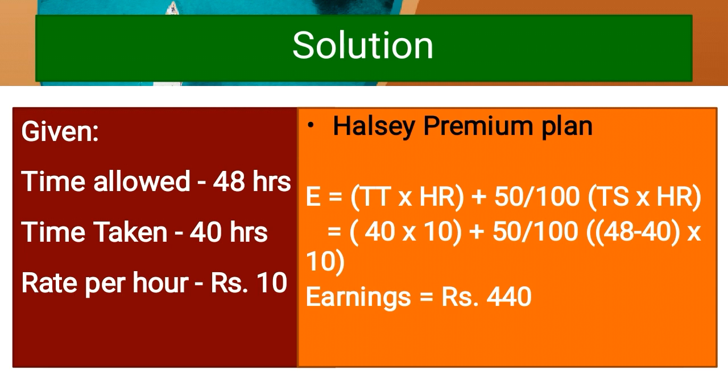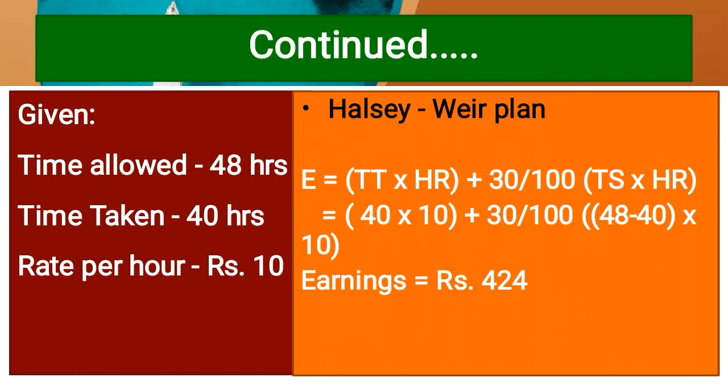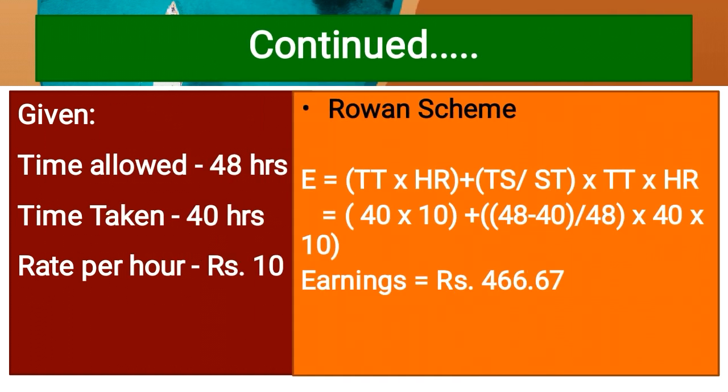Halsey Weir Scheme: same method applied but with 30% bonus instead of 50%. Earnings = 40 × 10 + 30/100 × (48 - 40) × 10 = 400 + 30/100 × 8 × 10. Worker is paid Rs. 424 under Halsey Weir scheme.